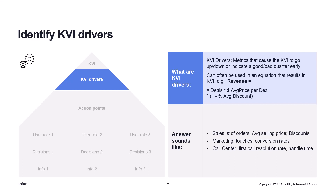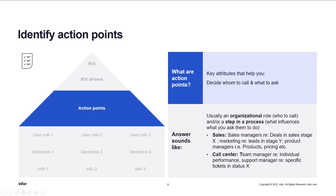We now have our numbers together — the KVI and at least two drivers, so we have at least three measures and metrics for our dashboard. Let's move on to action points. Now we're talking about attributes, dimensions, hierarchies — key attributes that help you decide who to call and what to ask. We have the metrics, the KVI, and the KVI drivers, and now we need to know who can actually do something about the drivers.